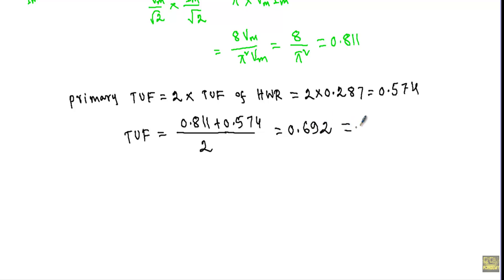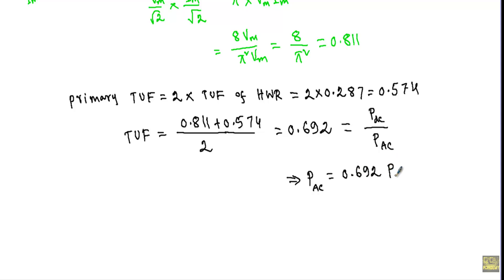The transformer utilization factor is the ratio of DC power delivered to the load resistor to the AC power input. This implies that in the case of the center-tapped transformer, the power supplied will not be totally delivered to the load resistor — only 69.2% will be delivered to the load resistor.